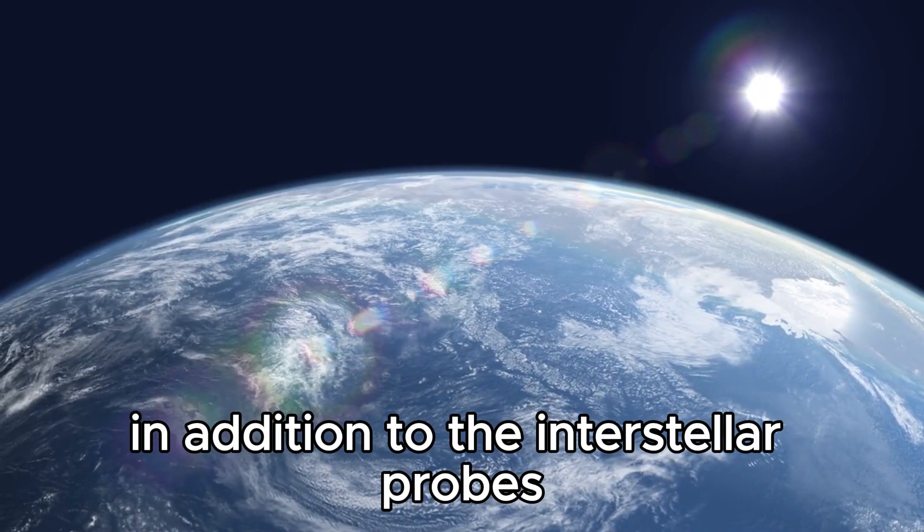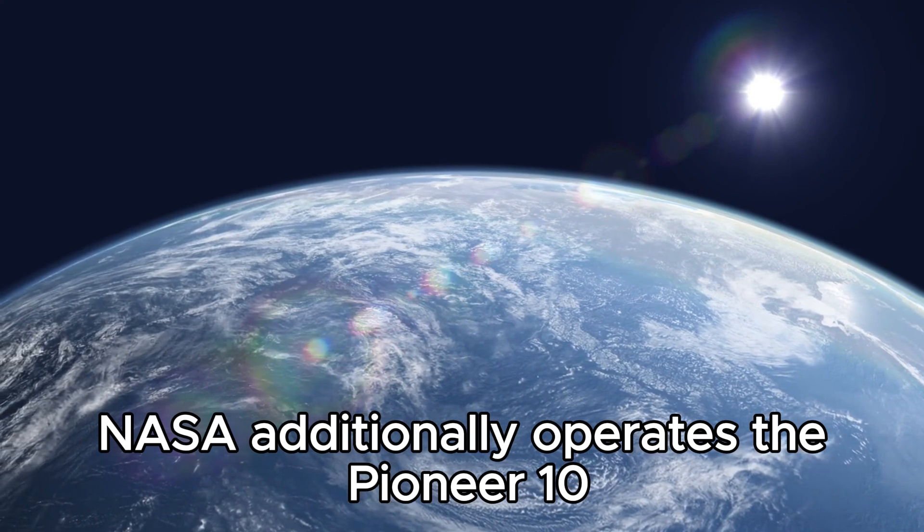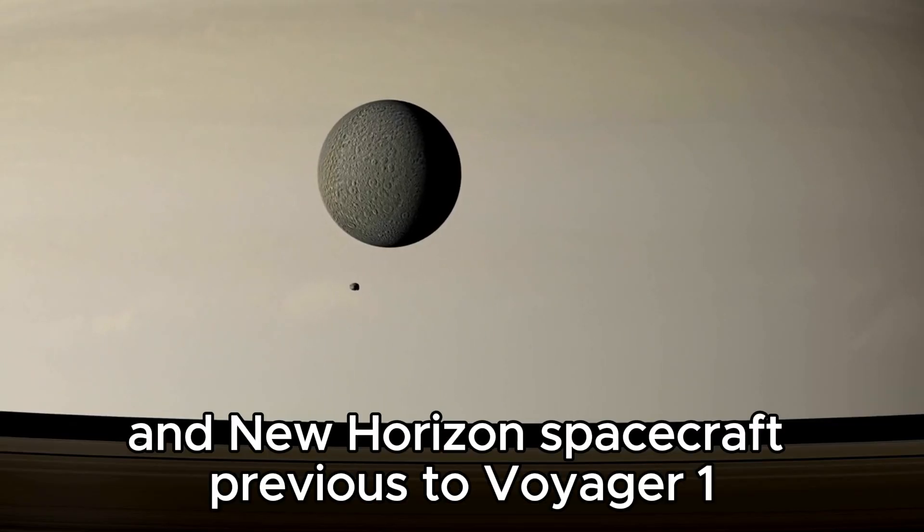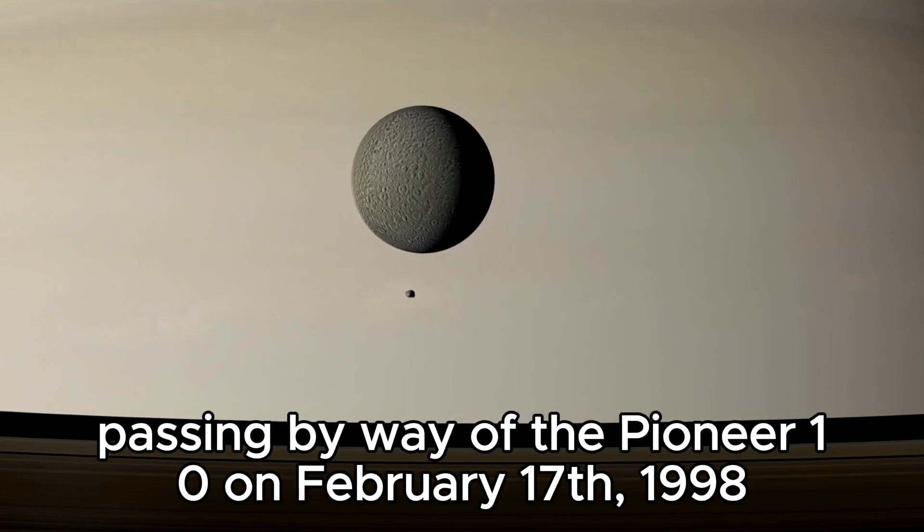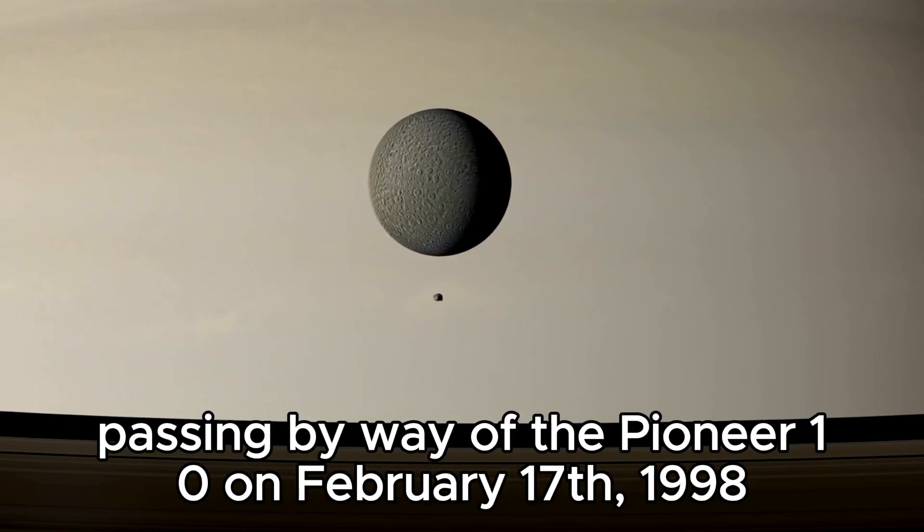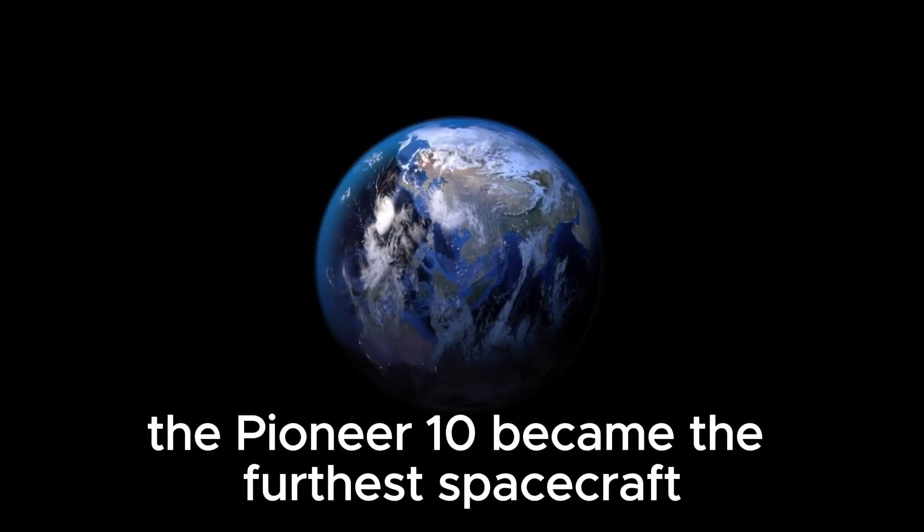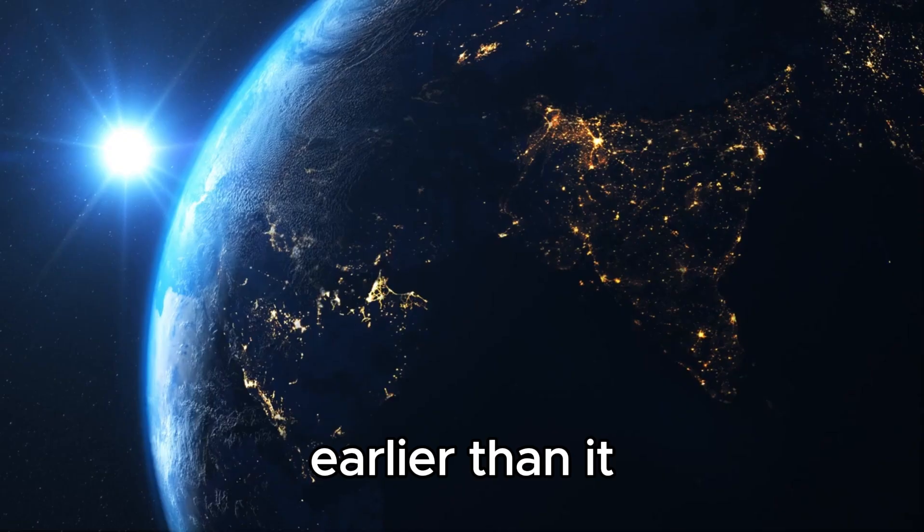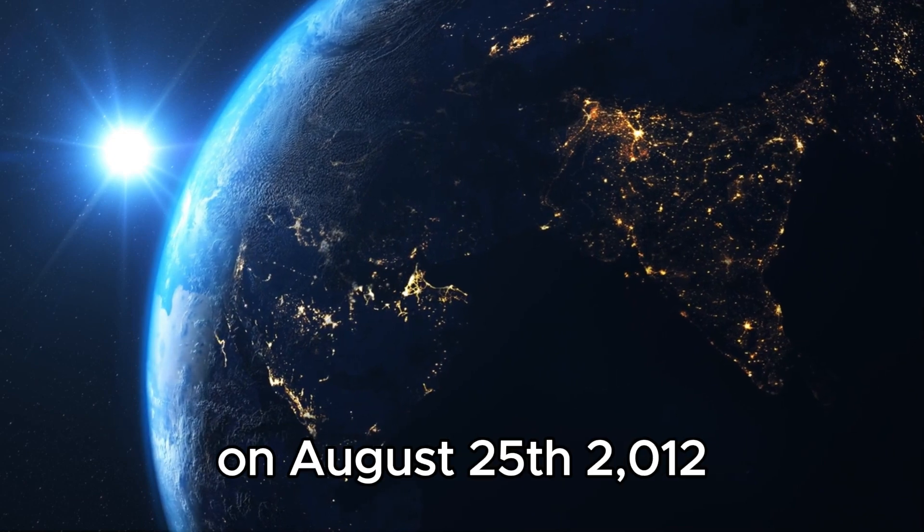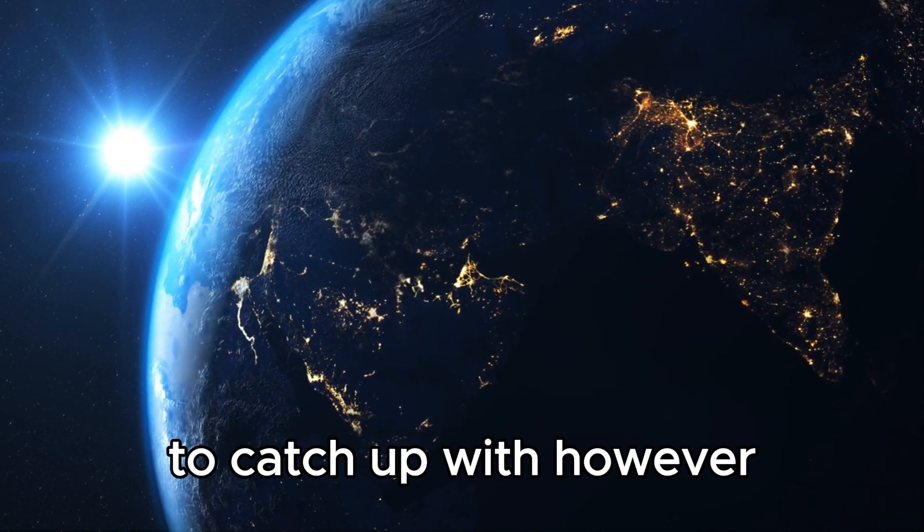In addition to the interstellar probes Voyager 1 and Voyager 2, NASA also operates the Pioneer 10, Pioneer 11, and New Horizons spacecraft. Previous to Voyager 1 passing by the Pioneer 10 on February 17, 1998, the Pioneer 10 was the furthest spacecraft. Voyager 1 continued its journey for a further 14 years before it finally arrived in the interstellar environment on August 25, 2012, without any other space probes in sight to catch up with.